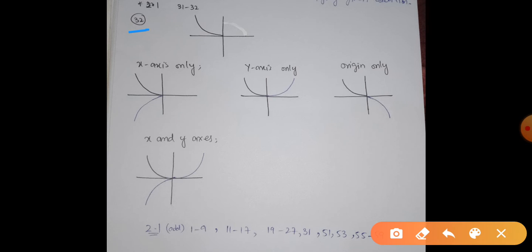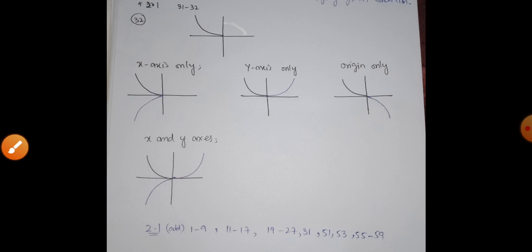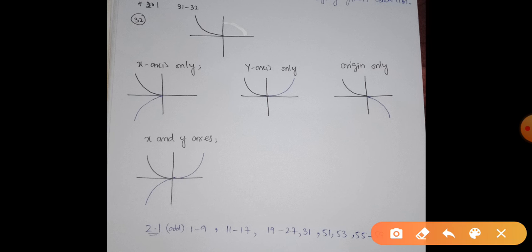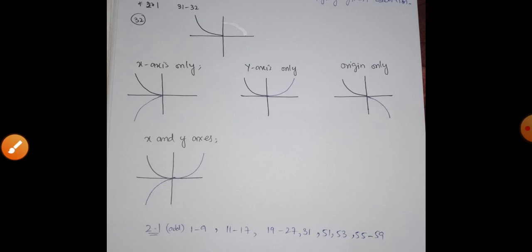Next, exercise 2.1 questions 31 and 32. In question 32, you are given a graph and have to extend it to make it symmetric about the x-axis only. Symmetry about the x-axis means a mirror image about the x-axis — the graph must look the same about that line. For symmetry about the y-axis, it must be extended in the corresponding form. For symmetry about the origin, if the graph is in the second quadrant, it must also appear in the fourth quadrant with the same shape. For symmetry about both axes, it must be extended in both forms accordingly.